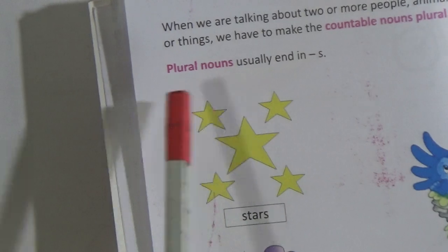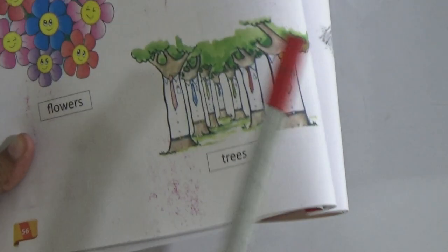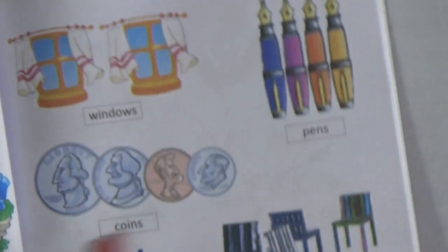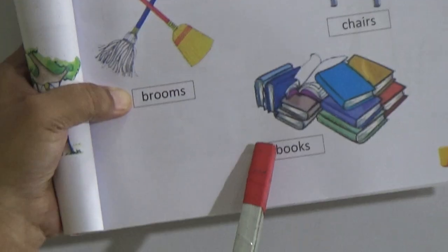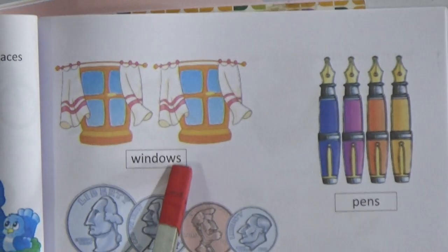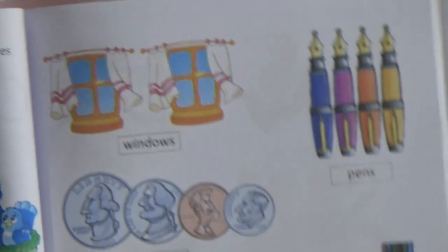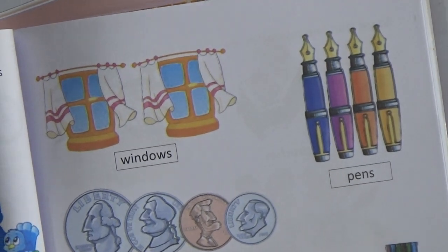Now we are talking about plural numbers. Just look — here we see more than one thing. So we have to write S or ES to make the singular number plural. For example: stars — one, two, three, four, five — there are five stars. Birds, flowers, trees — these things are more than one and that's why these are called the plural number. Windows, pins, coins, chairs, brooms, books — here we have added S, and this S actually indicates the plural number.